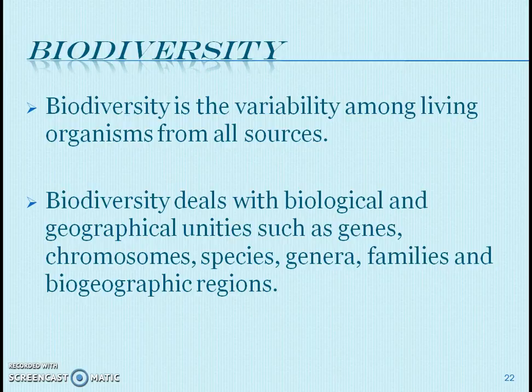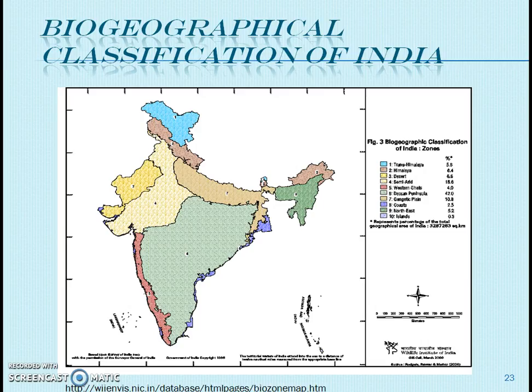In the previous session we learned various types of ecosystems, which is essentially ecological diversity. The next topic is the biogeographical classification of India. India has various types of climate and topography in different regions, which has led to the development of an enormous variety of flora and fauna. Biogeography is the study of geographical distribution of flora and fauna around the world.